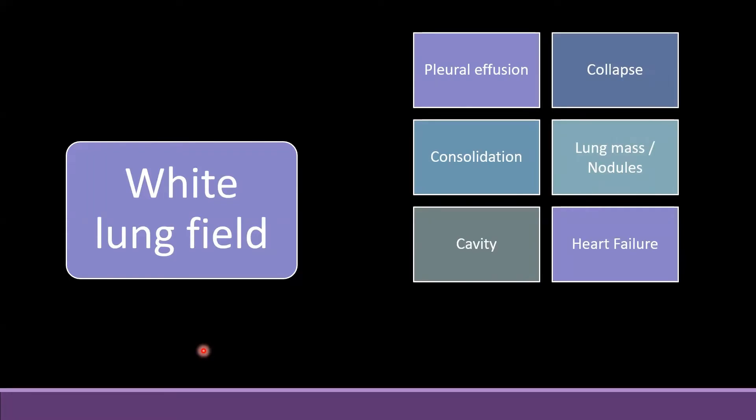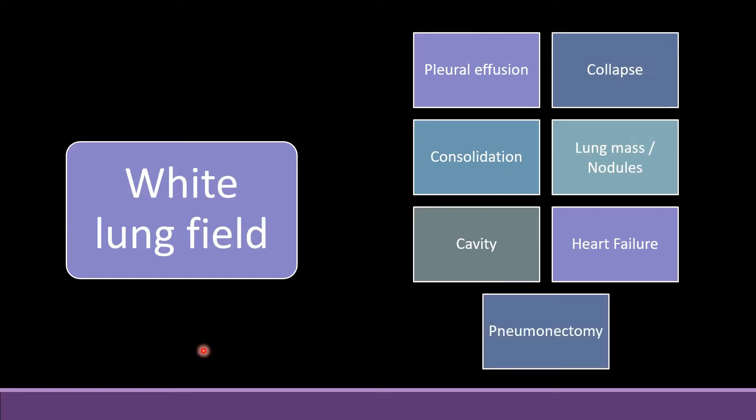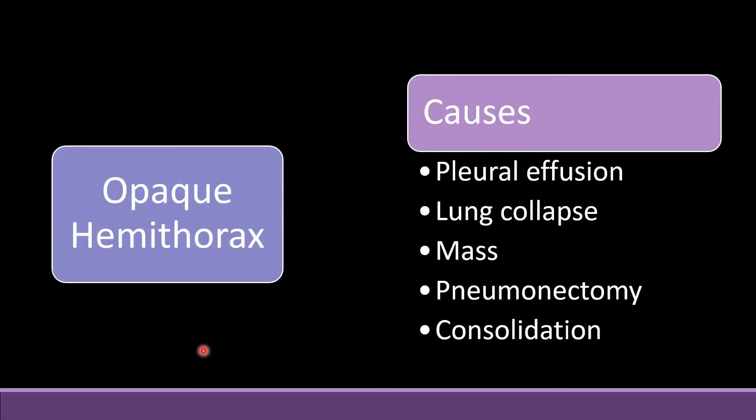Strictly speaking, the opacification in heart failure is usually a consolidation, and sometimes due to heart failure, bilateral effusion or only right-side effusion can also be seen, as well as pneumonectomy. Out of these white opacifications, some can cause complete opacification of one hemithorax, which is also called a white-out. A complete white-out of a unilateral hemithorax can be caused by pleural effusion, lung collapse, a large mass, pneumonectomy, or consolidation of the whole lung.